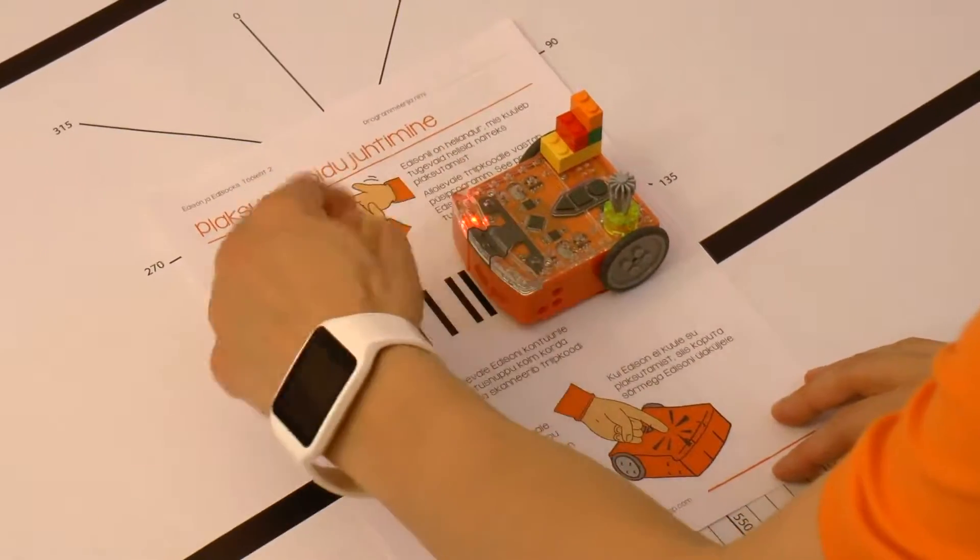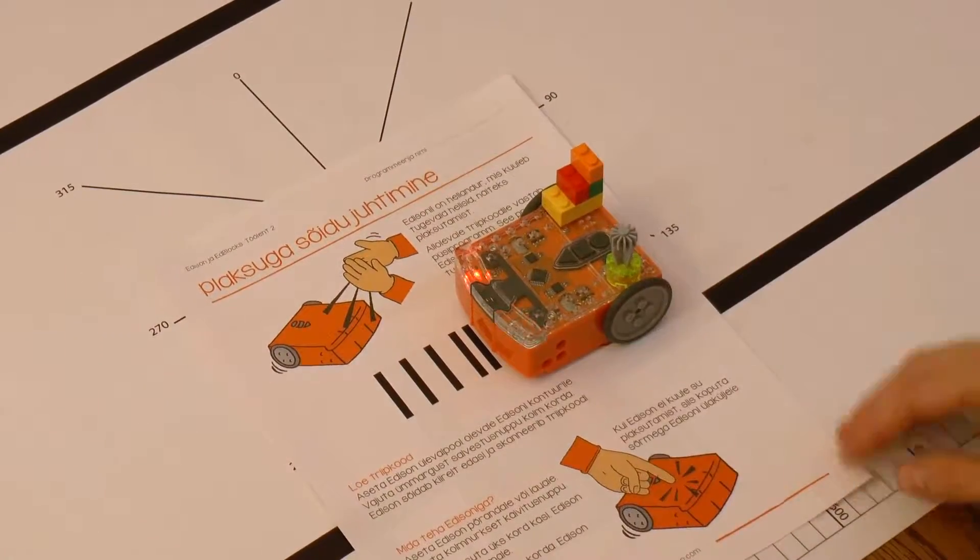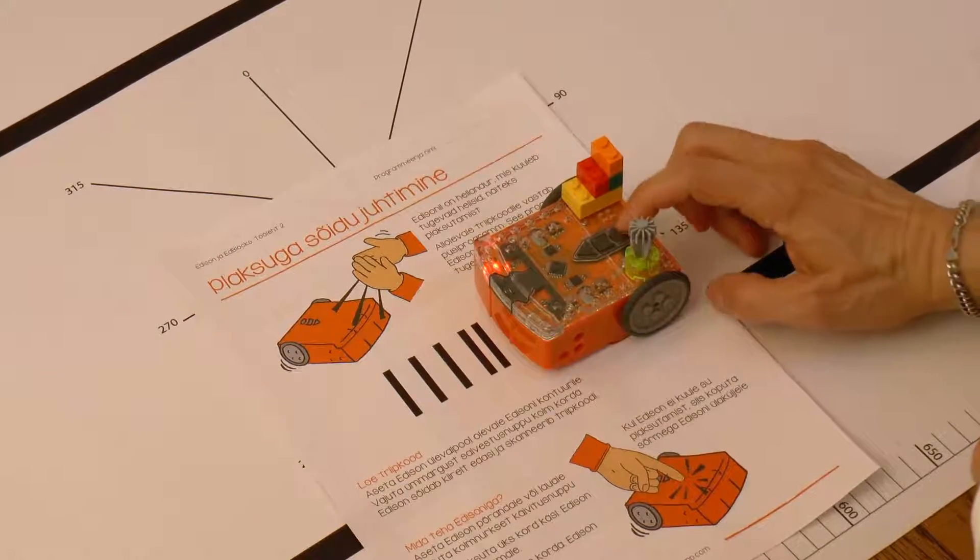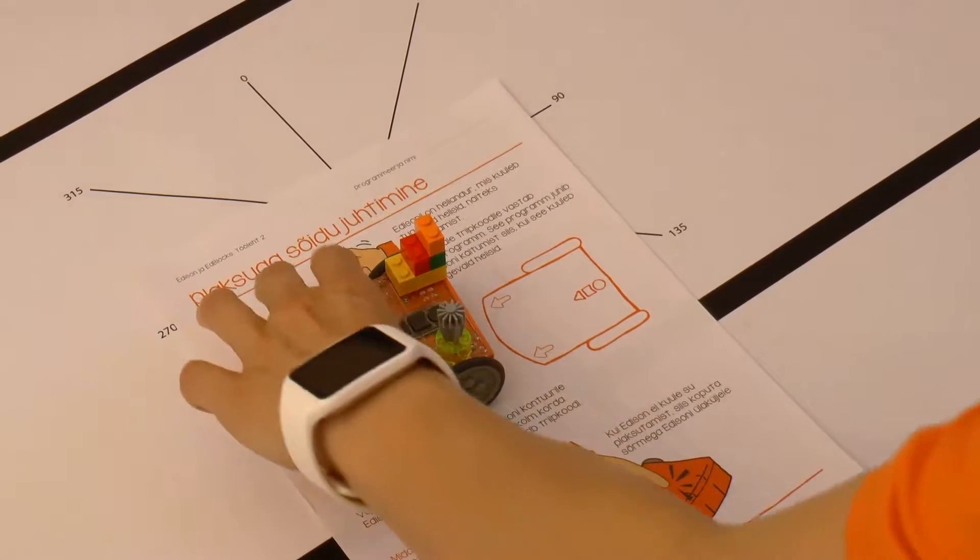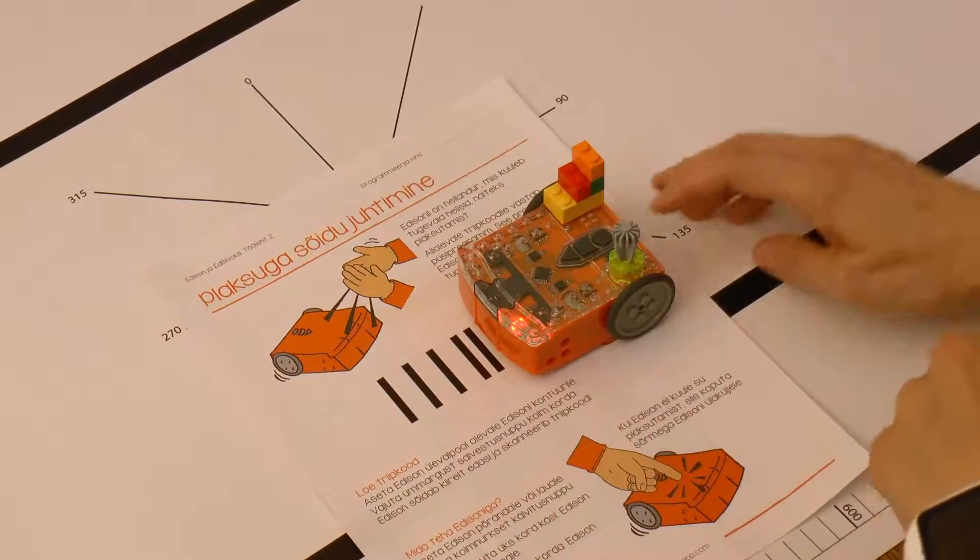Place Edison on the contour line marked on the worksheet facing the barcode. Rapidly press the round button three times. Edison drives over the barcode and does a confirmation sound.